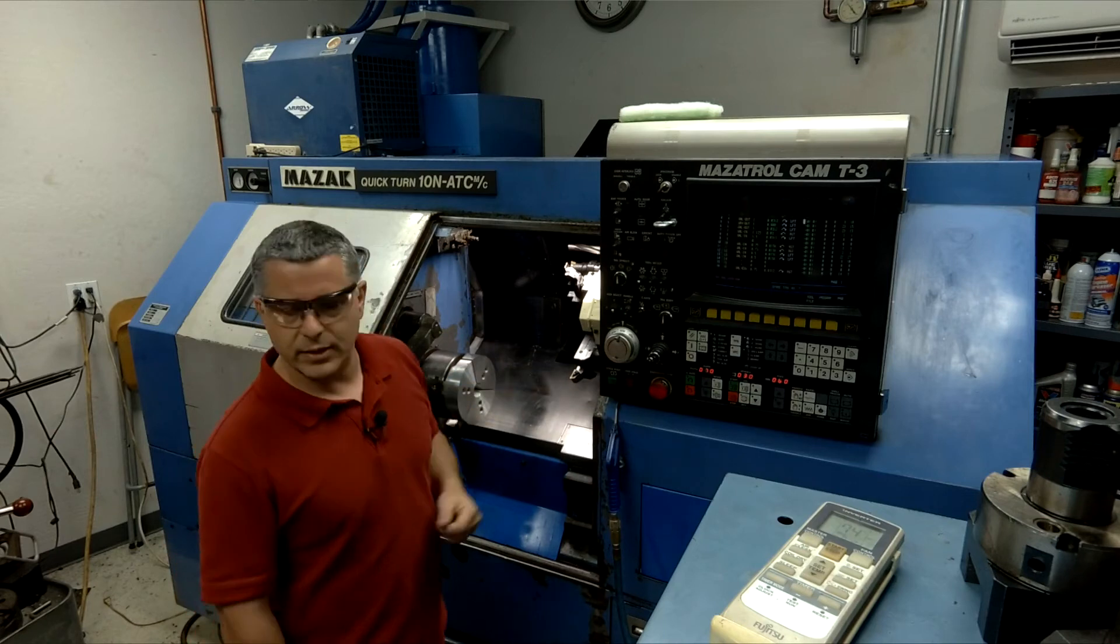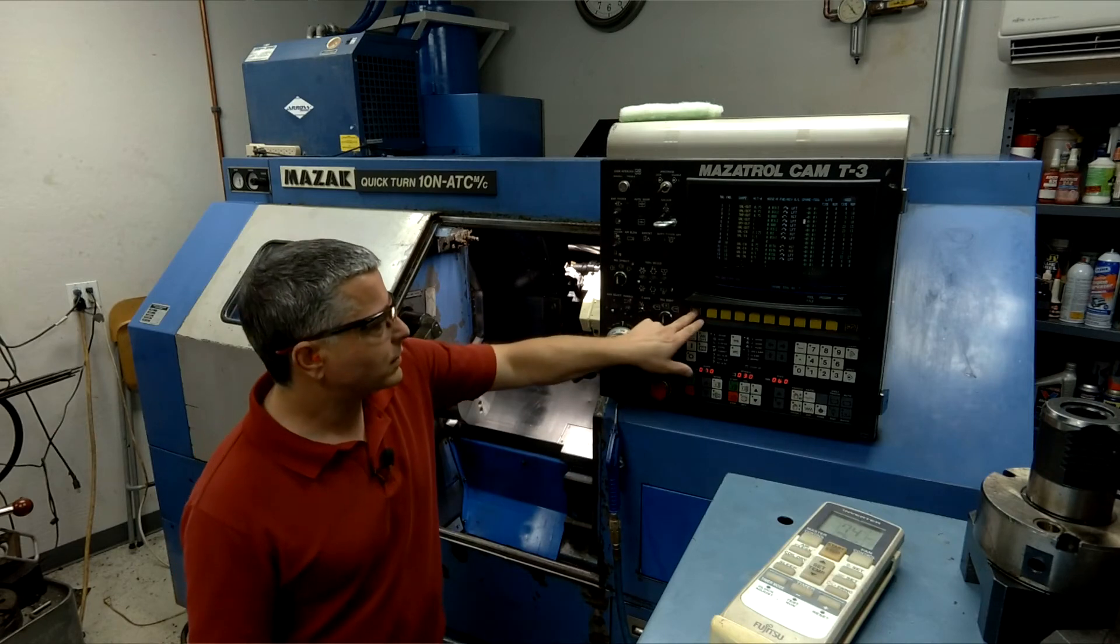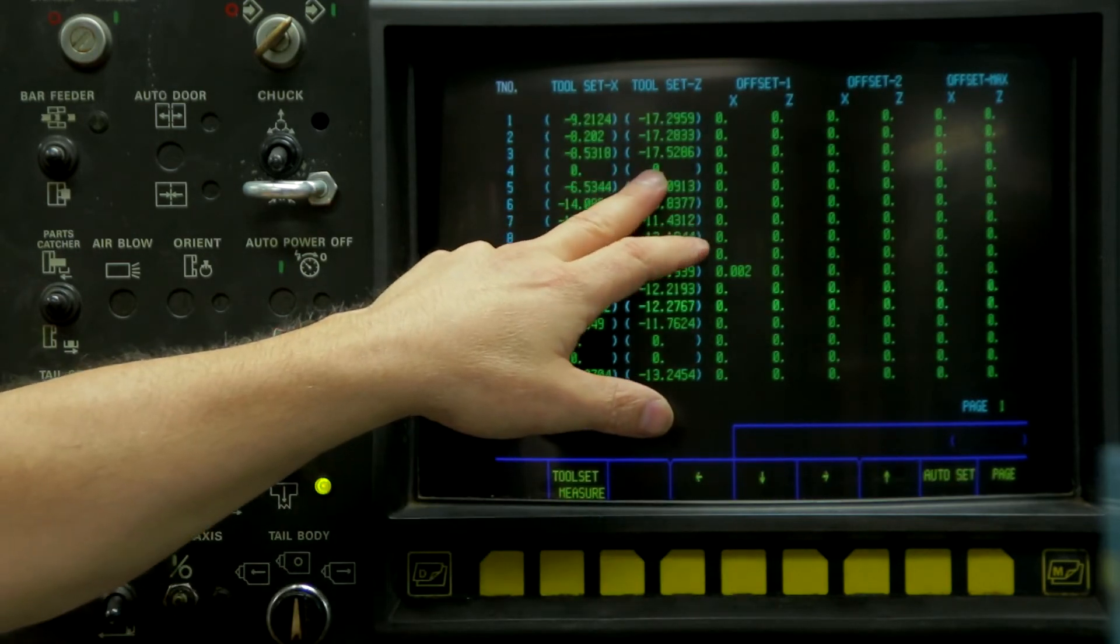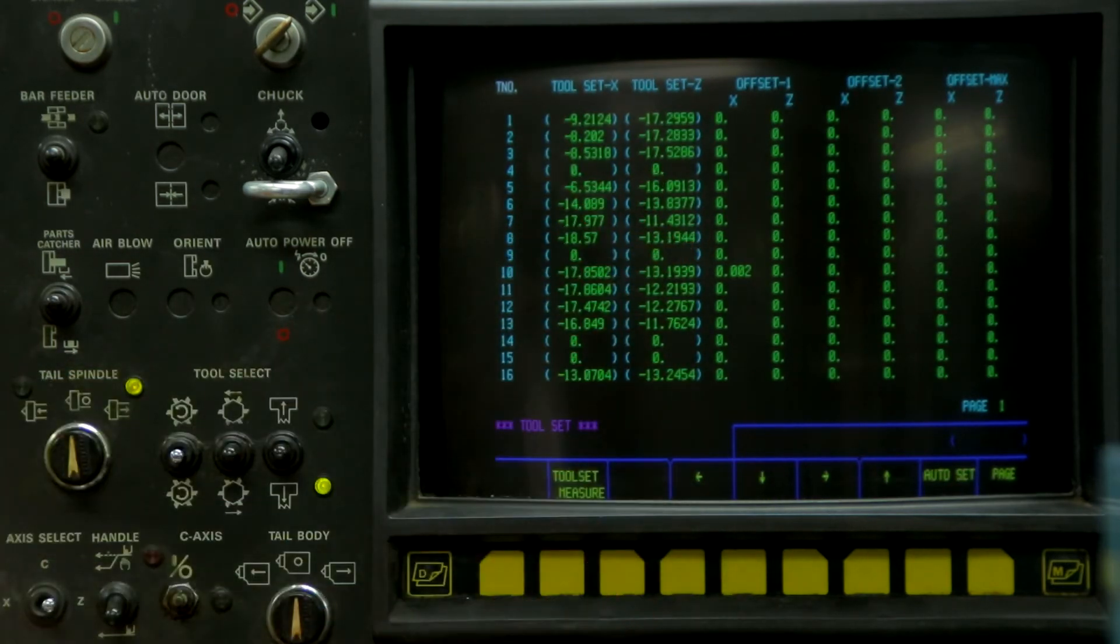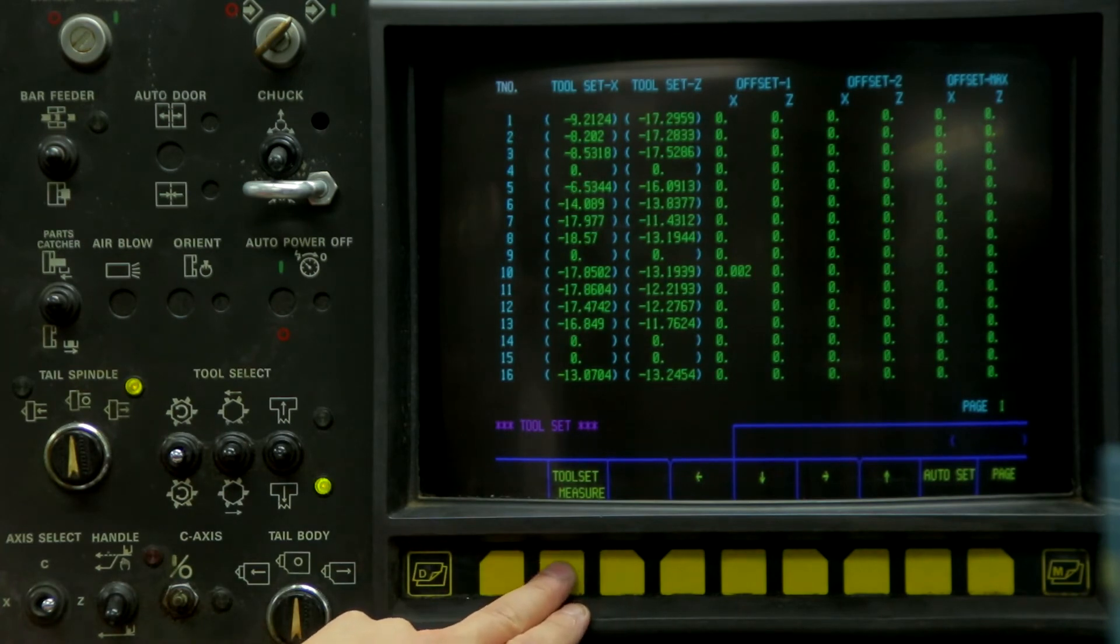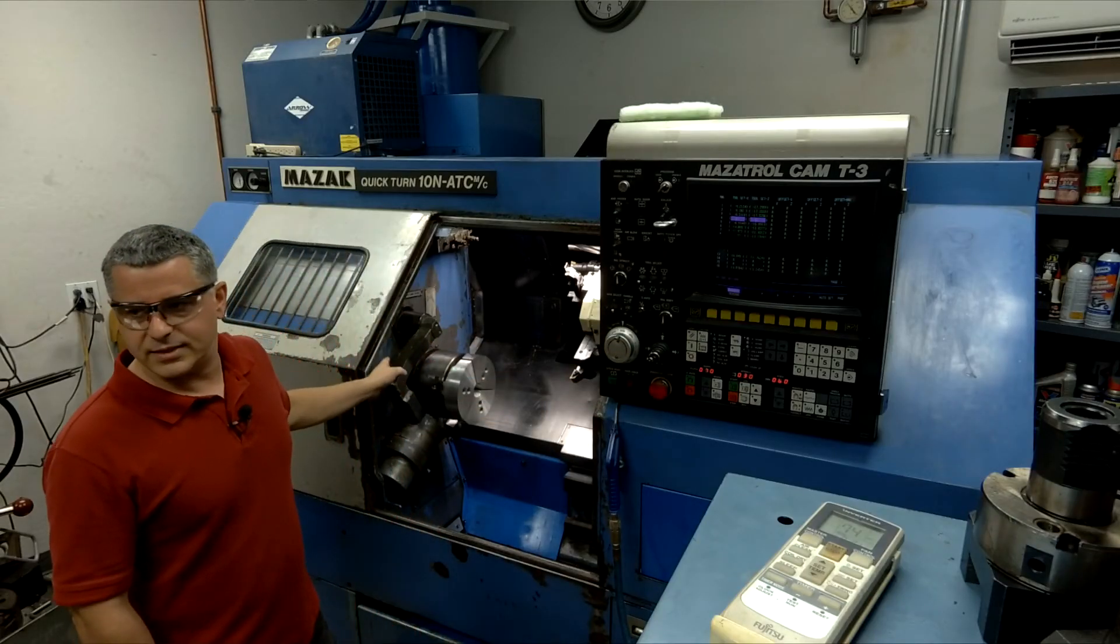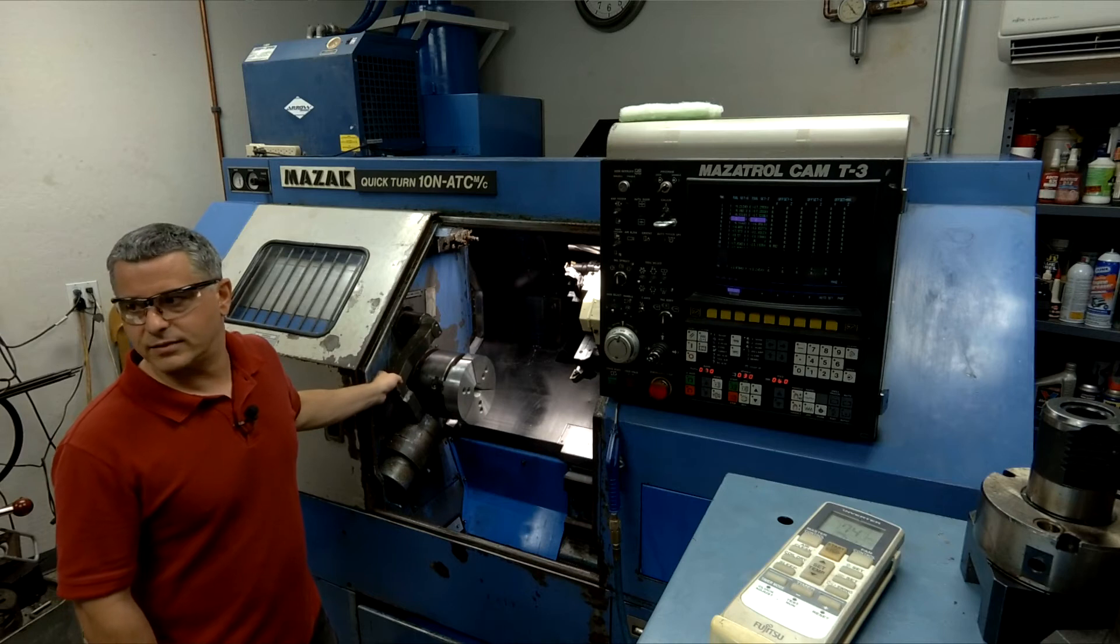So the next thing we got to do is we have to probe the tool. And that's down here on the tool set. I cleared it out. We're in hand control, and then we're going to hit tool set and measure. And the probe should come down, but in this case, there's a broken gear in it, so I need to help it.